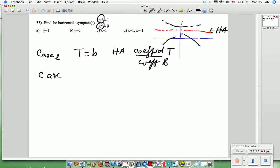And case two is where top is less than the bottom. In that case, the HA is really easy. The HA is just y equals zero.